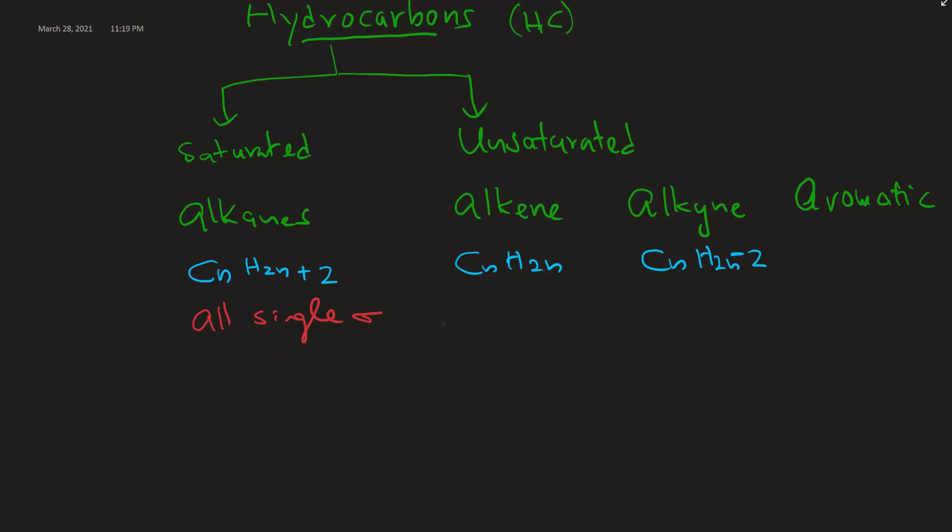Now alkanes have all single bonds, all sigma bonds, and they are 109 degree bond angle, tetrahedral, and sp3 hybridization. That's kind of the best thing to memorize. The rest has a little bit of a variation.